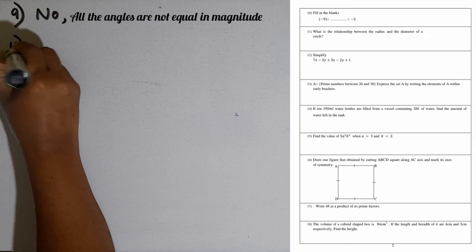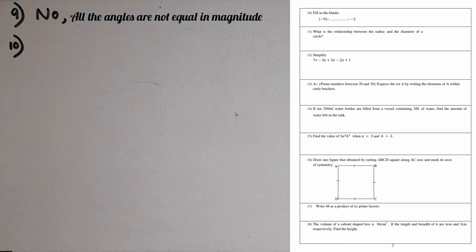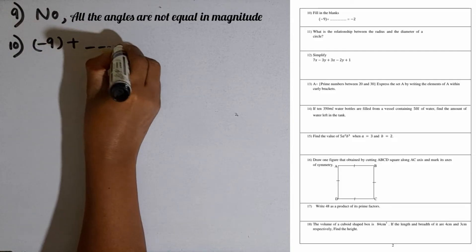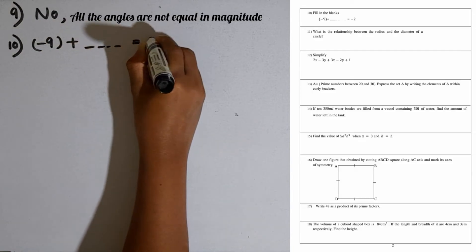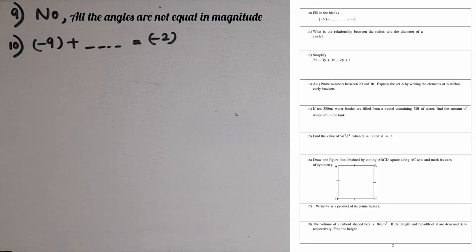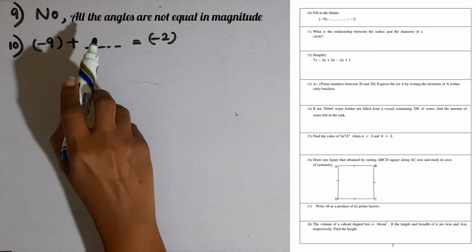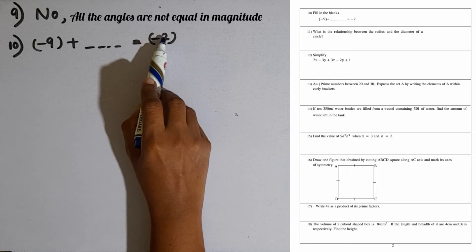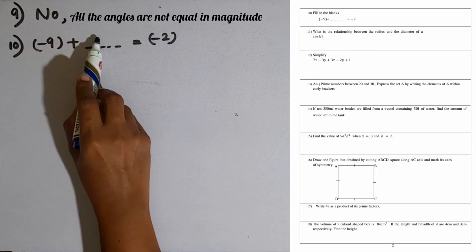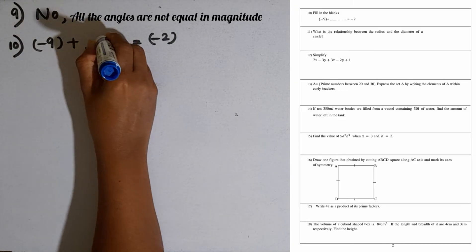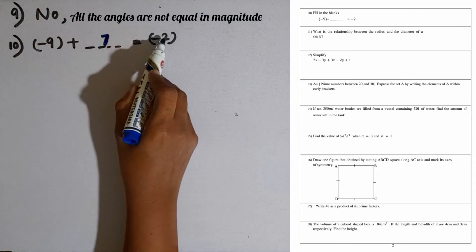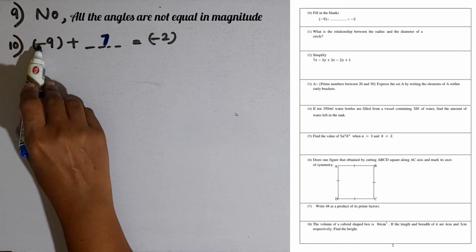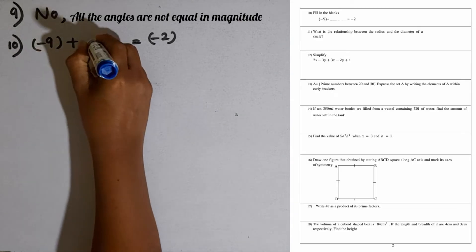Question number 10. Fill in the blanks. We are given minus 9, then plus a blank, equal to minus 2. The answer is minus 2, with magnitude 2. To get magnitude 2, the magnitude of the blank must be 7, since the difference of 9 and 7 is 2. The sign of the answer is minus, which comes from minus 9, so the blank must be plus 7.